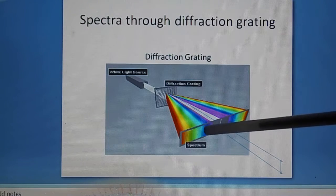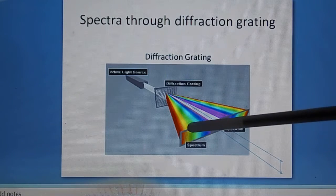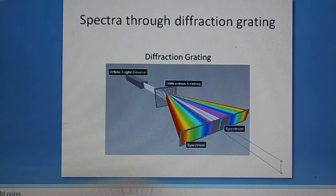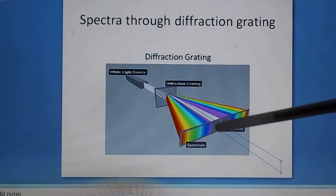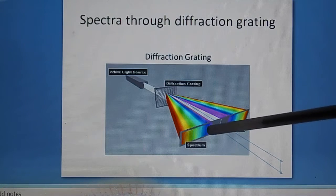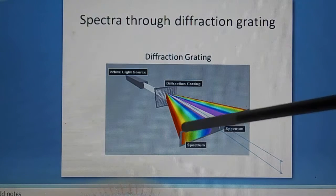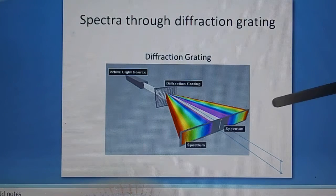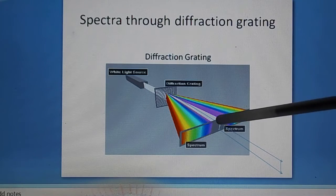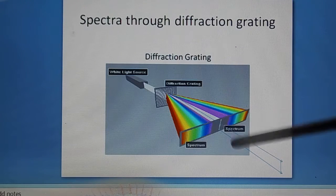Violet, indigo, blue, green, yellow, orange, and red colors are there. Maximum deviation here. Do you agree that the red color is on both sides maximum deviated, but the violet color is very less deviated?